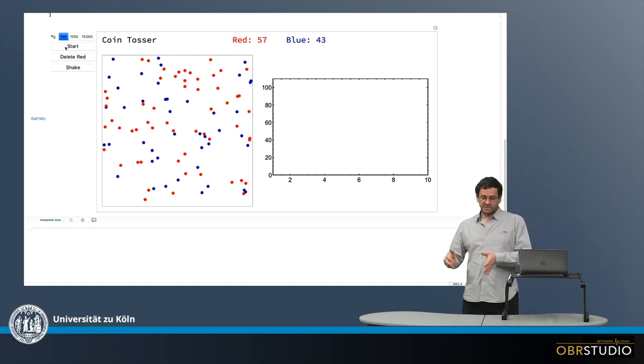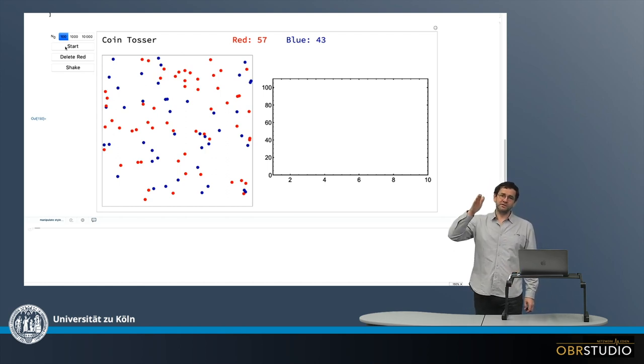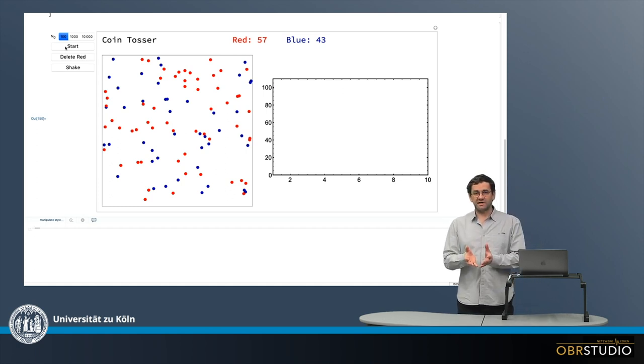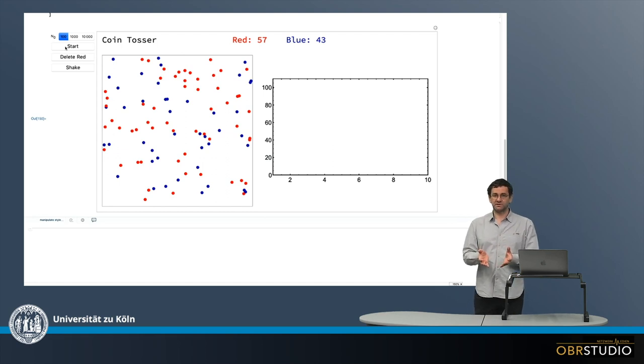And then in the next time step again we throw all the dice and again only the dice showing a one are removed. So the decrease is much slower which means that you can think of the sides of the dice as sort of the decay constant.